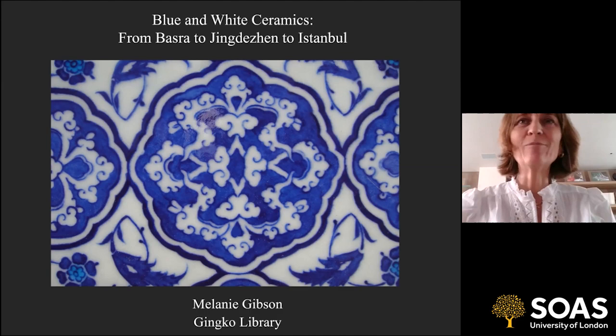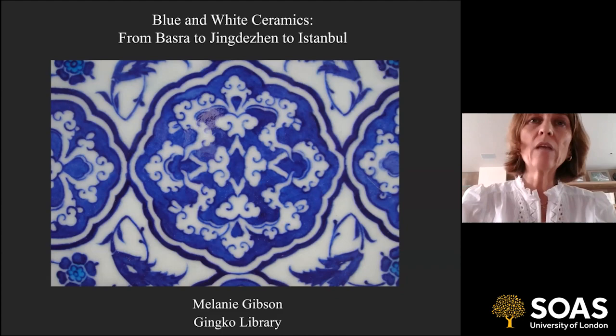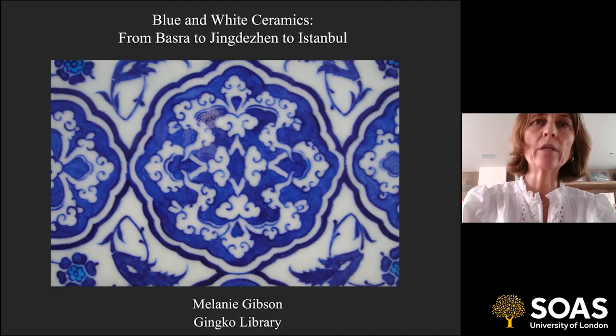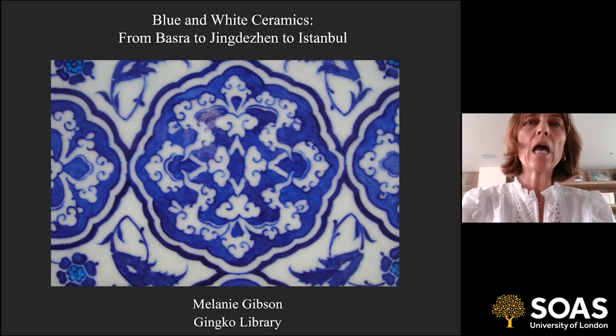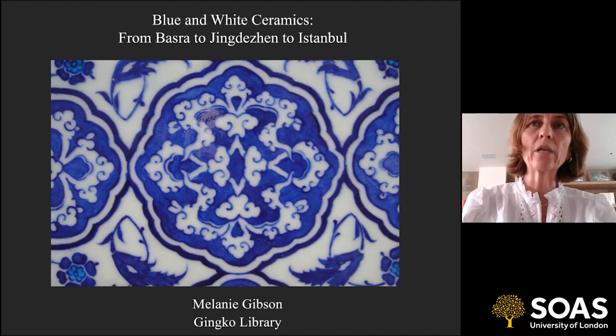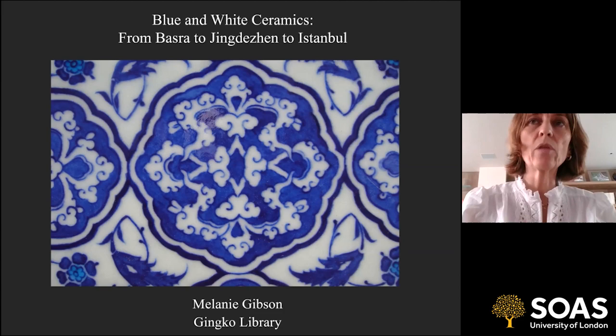I've divided the lecture into three parts. The first part looks at the early period in Basra and Kashan, taking us up to the Mongol invasions. In the middle section, I'll look at the initial production of blue and white in Jingdezhen and its impact on Syria and elsewhere in the Middle East. In the third section, we'll focus on the subject of my paper: how those ideas were interpreted in ceramics in Turkey.